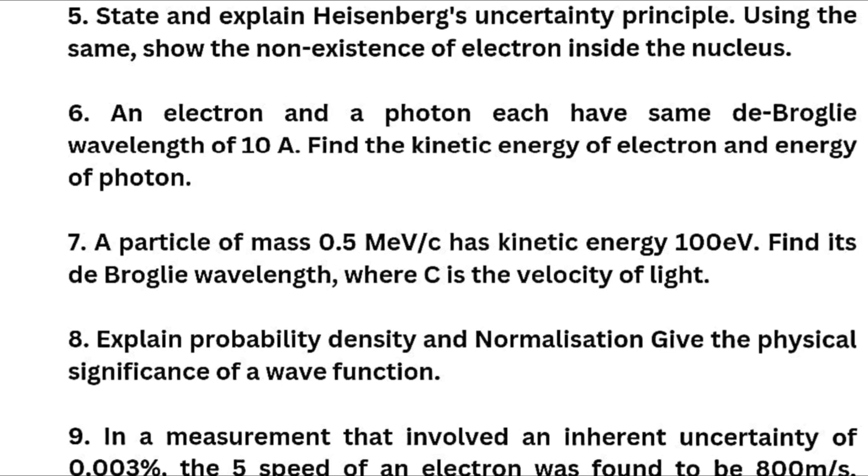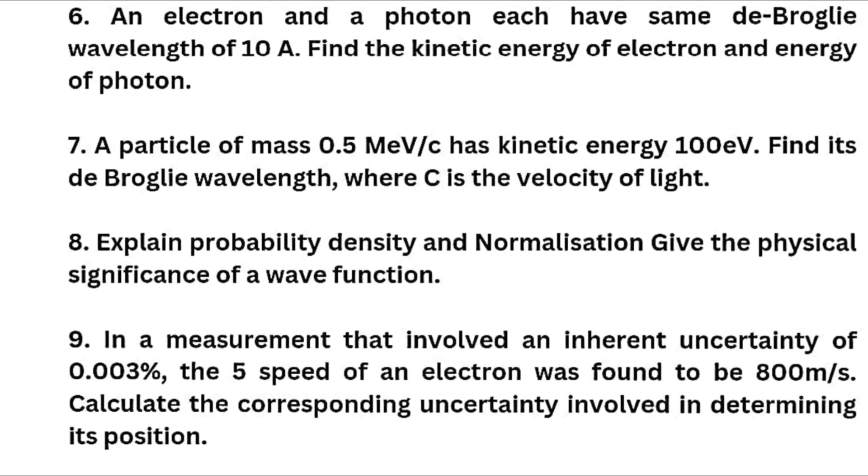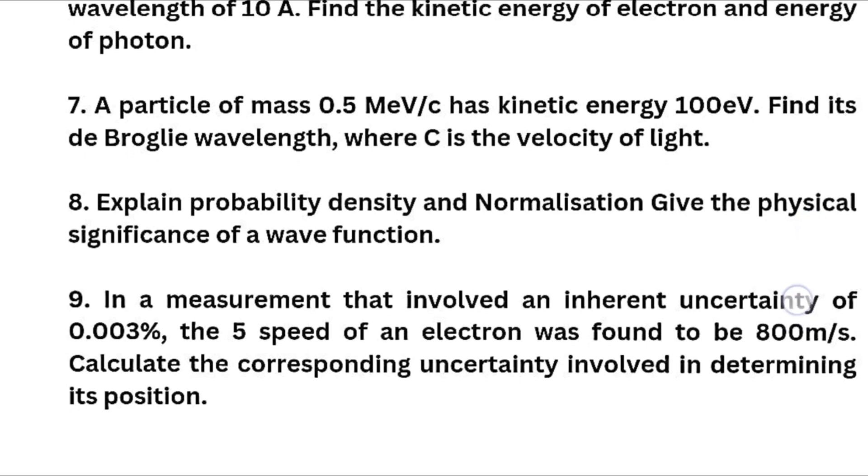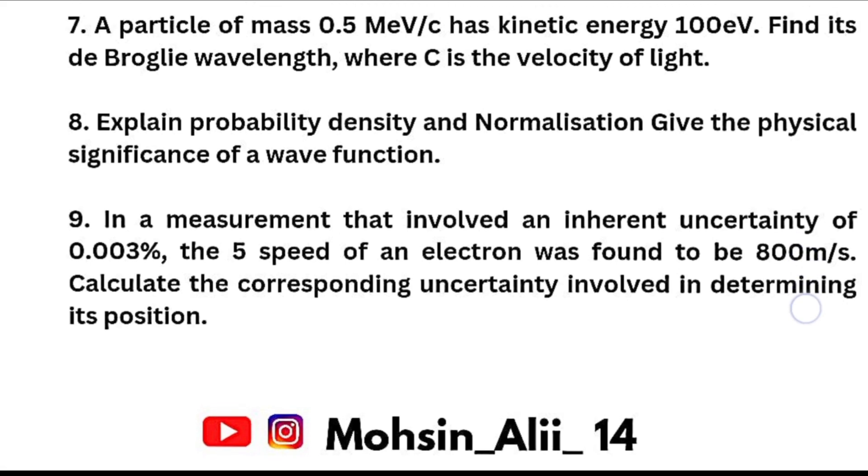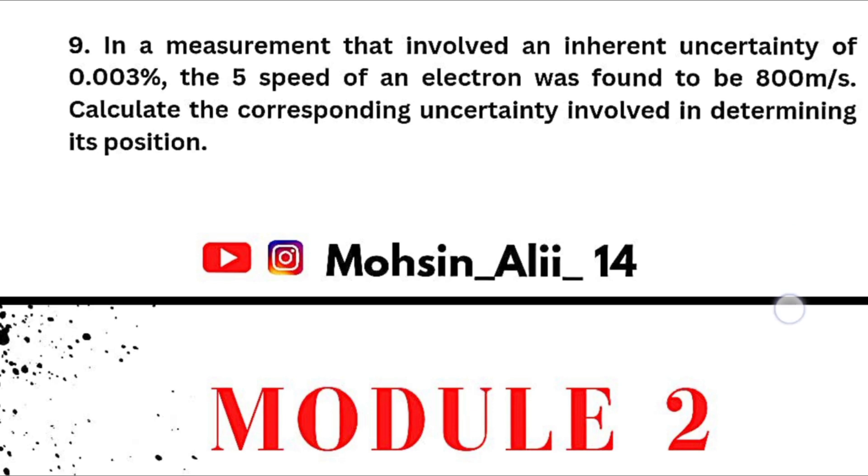You can go through my playlist where you will find these answers of these numericals over there. Next similarly we have here the particle of mass 0.5 mega electron volt has kinetic energy 100 electron volt. So find its de Broglie wavelength where C is the velocity of light. You are seeing here 0.5 mega electron volt divided by C. C is nothing but velocity of light. Next we have explain probability density and normalization due to the physical significance of a wave function. Next you can see also here the numerical again in a measurement that involved an inherent uncertainty of 0.003 percent. The speed of an electron was found to be 800 meter per second. Calculate the corresponding uncertainty involved in determining its position. So these are all important questions from your module first. Some numericals which you have to practice. So only this much question is enough to cover module first.